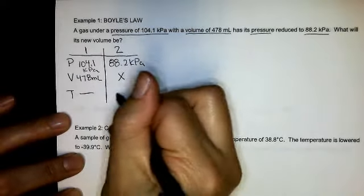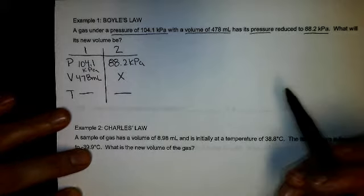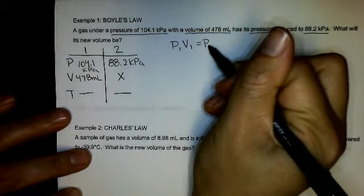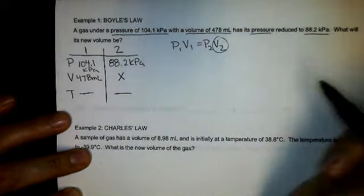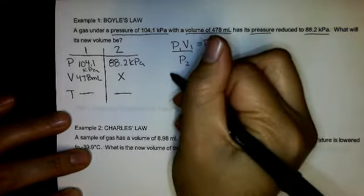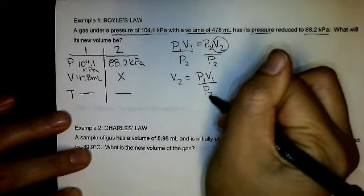Because this is Boyle's Law, my temperature remains constant. So my formula with pressure and volume is P1V1 equals P2V2. I'm looking for V2. So I divide both sides by P2. So I get V2 equals P1V1 over P2.